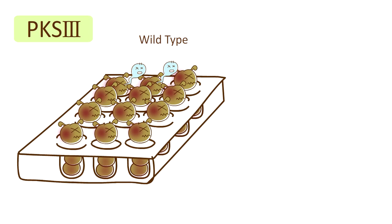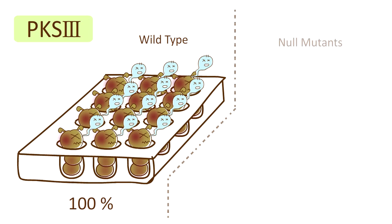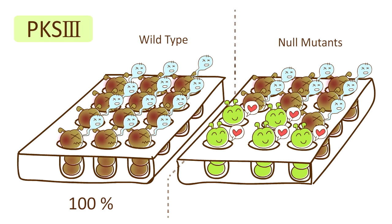The results showed that wild type injection resulted in 100% death, whereas injection with the mutant spores caused only 60% of the insects to die.